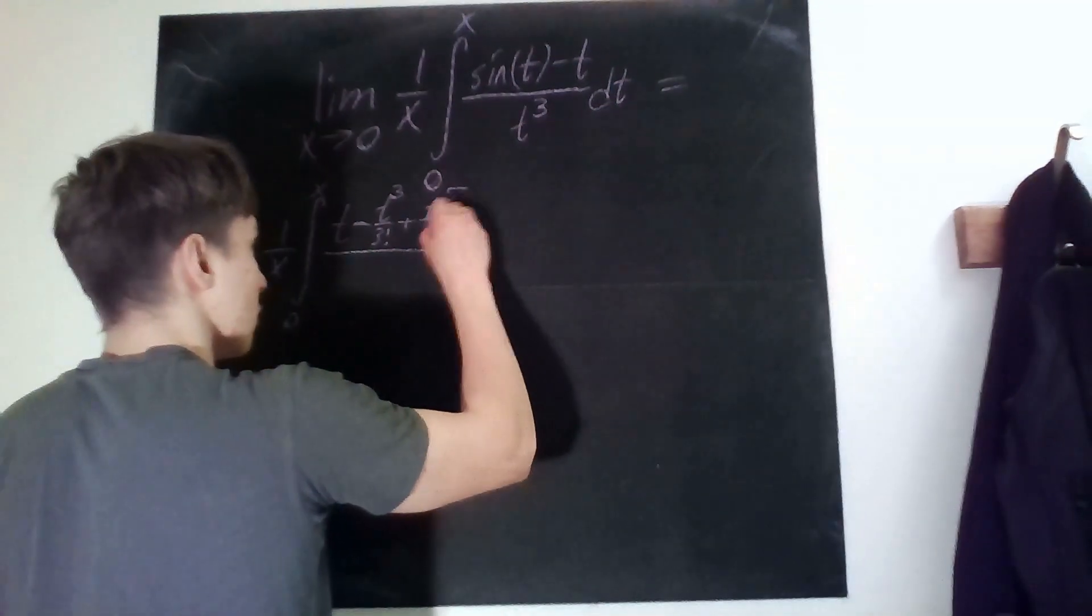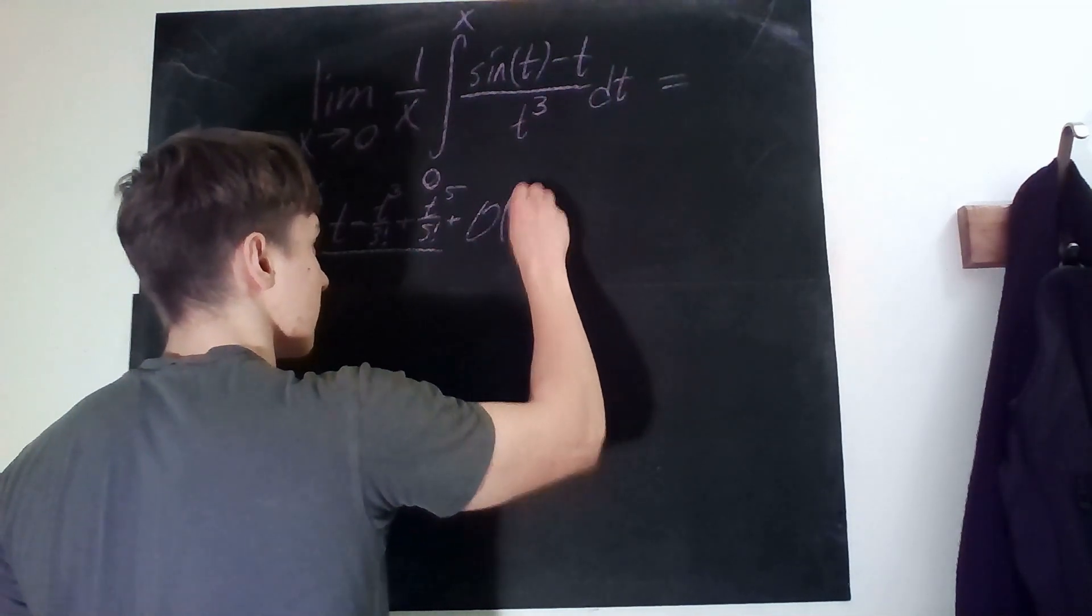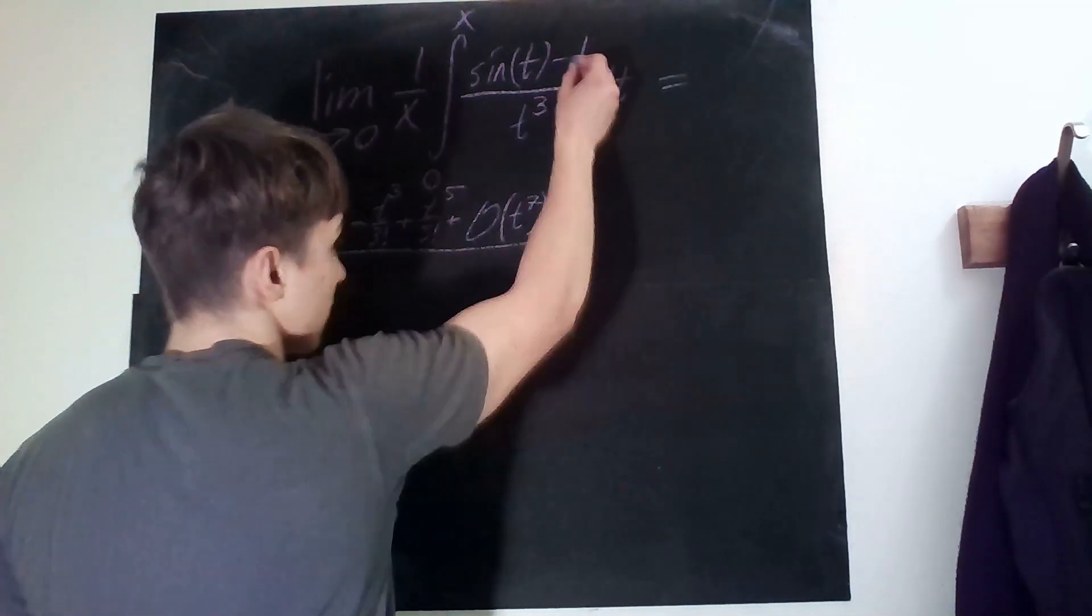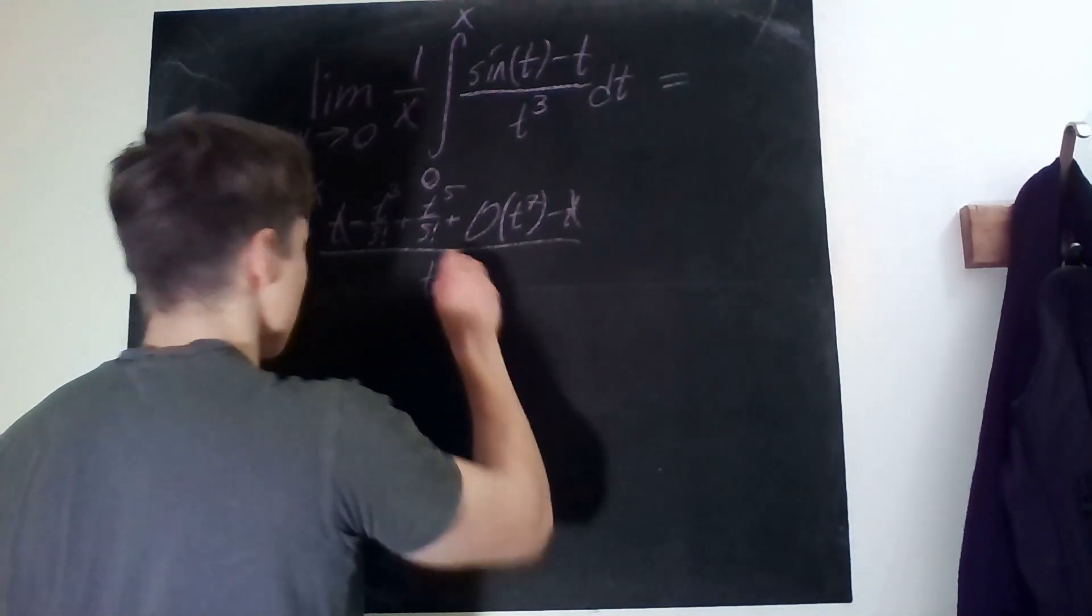Then we have a minus t, so these two things cancel out and then divided by t³.